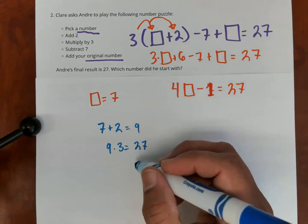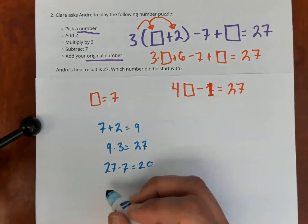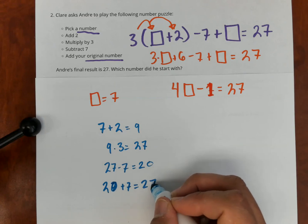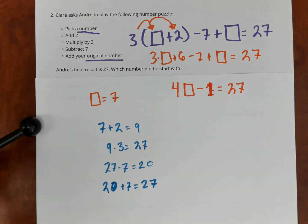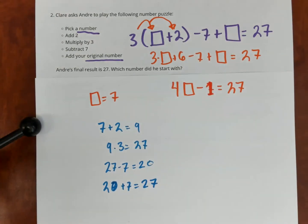subtract seven, that's 20, then add my original number, and I end up with 27. Which is what I start with, okay? So just checking there at the end. Thank you.